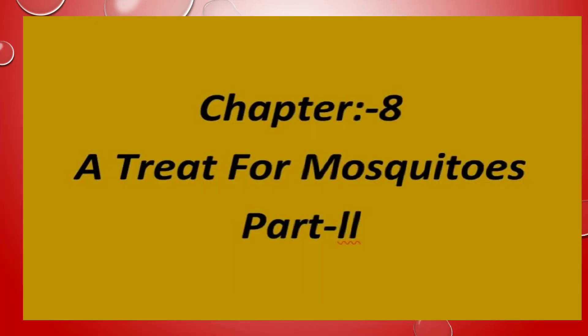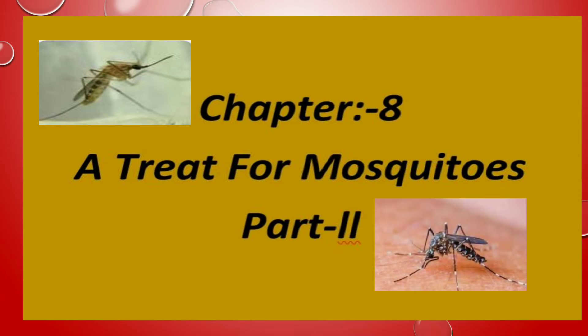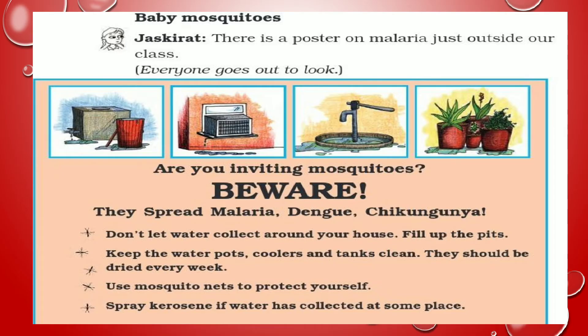Hello students, welcome back to your EBS class. Today we will read the remaining part of chapter 8. Today we will do chapter 8, part 2. And what is the name of the chapter? A treat for mosquitoes — mosquitoes के लिए दावत. I think आपको part 1 अच्छे से याद होगा. Now let's continue with part 2. अब part 2 को continue करते हैं.